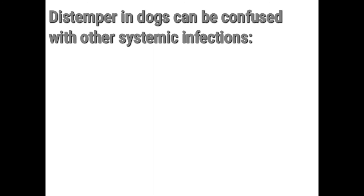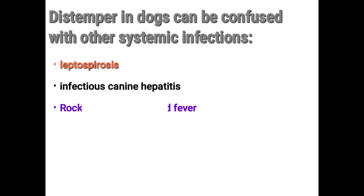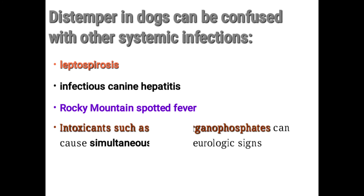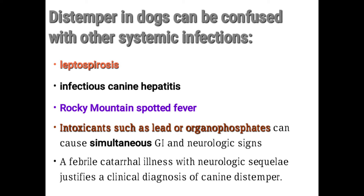Canine distemper can be confused with other systemic infections. Differential diagnoses include leptospirosis, infectious canine hepatitis, Rocky Mountain spotted fever, and intoxicants such as lead or organophosphates, which can also cause simultaneous gastrointestinal and neurological signs. A febrile illness with neurological signs can justify a clinical diagnosis of canine distemper. These differentials will be discussed in later lectures.